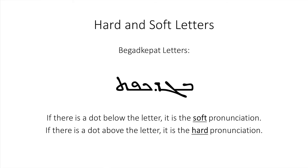Like biblical Hebrew, we have hard and soft pronunciation on a certain set of letters. These are known as the Bagad Kapat letters — a way to remember which letters they are. You have Bet, Gamal, Dalat, Kap, Pe, and Tau. Both can have either a hard or soft pronunciation, distinguished by having a dot either on the top or the bottom. If there's a dot below one of these letters, it's going to be a soft pronunciation; if the dot is above, you're going to have the hard pronunciation.